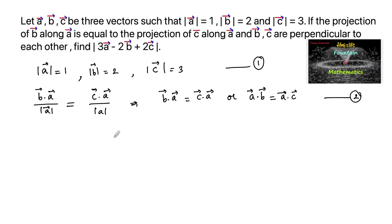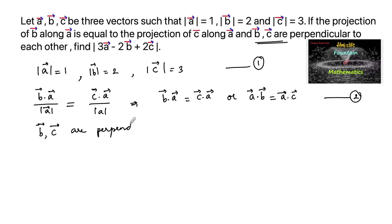Let us consider this as equation 2. Also given that B and C are perpendicular to each other, so we can set their dot product to 0: B·C = 0. This is equation 3.